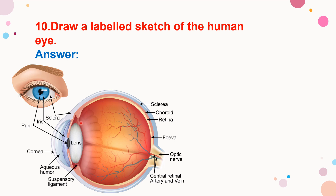Here we have the iris part, muscular diaphragm, pupil, and sclera. This is the cornea. This is about the human eye.